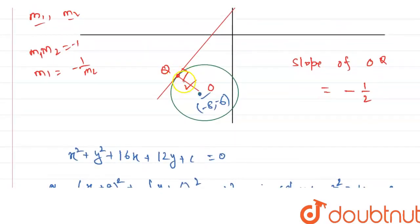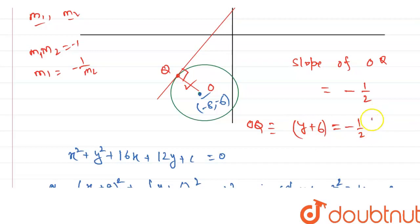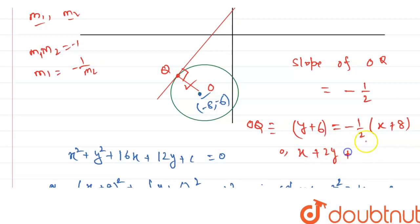This line is passing through the point (-8, -6). So, the equation of OQ is: y + 6 = (-1/2)(x + 8). We simplify to get x + 2y + 20 = 0. Multiplying equation 1 (the tangent, 2x - y + 5 = 0) by 2 gives 4x - 2y + 10 = 0. This is equation 2, and x + 2y + 20 = 0 is equation 1.